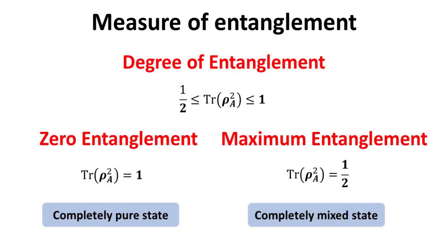To briefly summarize what we have learned: we established a measure of entanglement given by the trace of the reduced density matrix rho_A squared. This measure is bounded between one-half and one. The measure is one when we have a separable state, where rho_A is composed of just the outer product of a pure state. The measure is one-half when we have the Bell states, where rho_A is in a perfectly mixed state demonstrating maximum entanglement. We will say more about these Bell states in an upcoming video in this playlist. Stay tuned, subscribe, and join us!